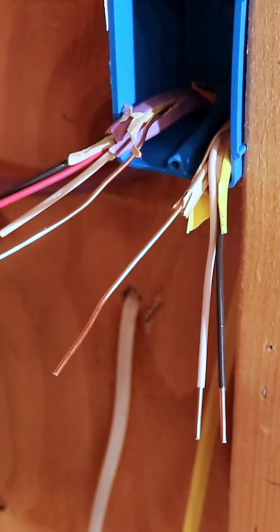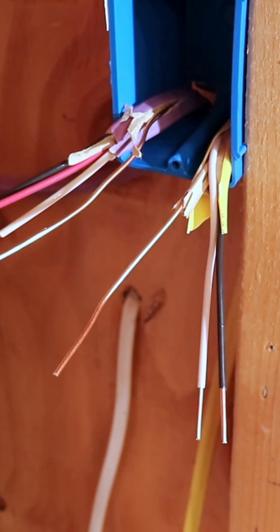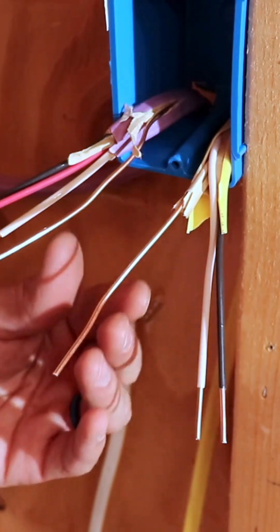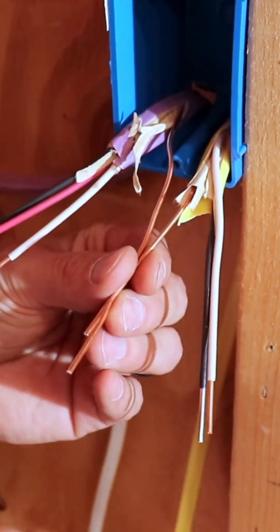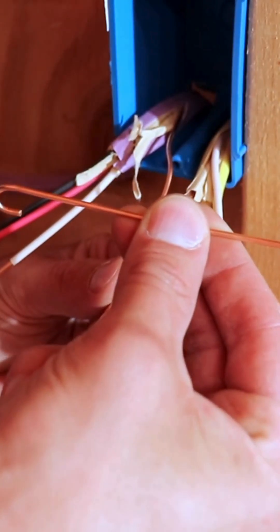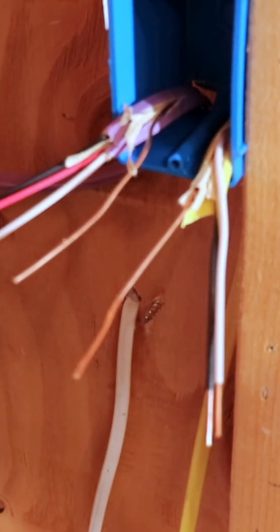In this video, I'm going to show you how to wire a three-way switch. In this first box, we have a 12-2 with ground coming in that supplies power to the switch. We also have a 12-3 with ground that goes from this switch over to the second switch.